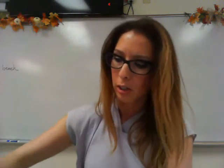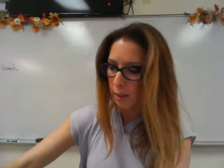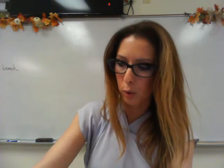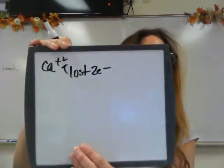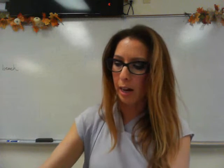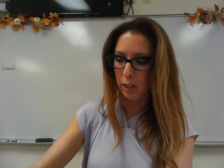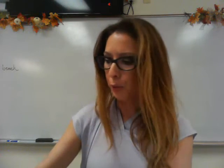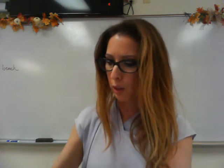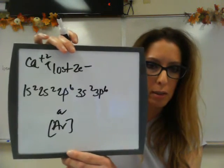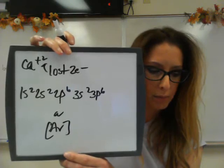For calcium with a +2 charge, losing 2 electrons puts you at argon. So it has the same electron configuration as argon: 1s2, 2s2, 2p6, 3s2, 3p6, or argon in brackets.